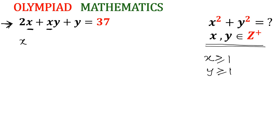So I am going to take x common. So x times (2 plus y) plus y equals 37. Now it is clearly visible we have y plus 2. So here only y is there, so I am adding 2 to both sides.